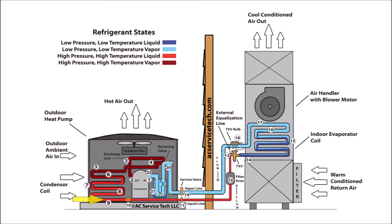In step ten, the high pressure, high temperature, subcooled liquid bypasses through and around the inactive metering device and remains unchanged. The liquid refrigerant continues to reject heat and lower in temperature until it exits the outdoor unit at step eleven. Step eleven is where you can read the high pressure, high temperature liquid refrigerant pressure — there is typically an access port on the side of the liquid line service valve. The temperature decrease of the liquid refrigerant between step eight and step eleven is called the subcooling.